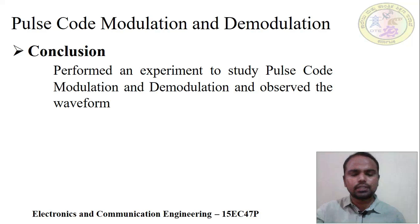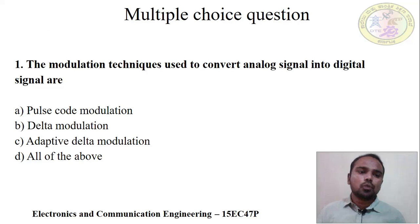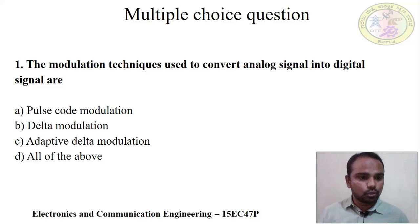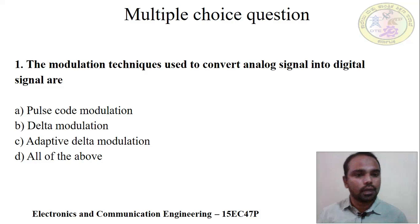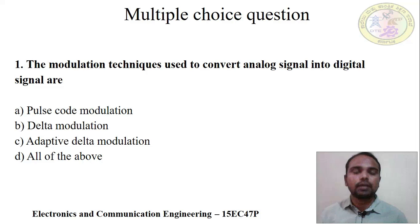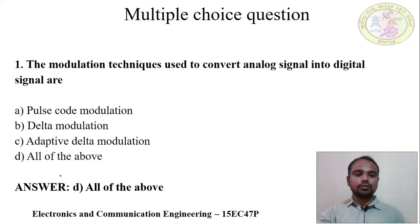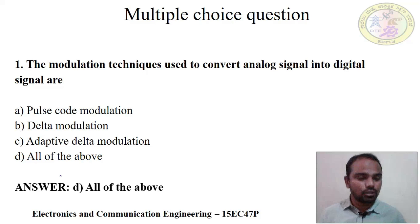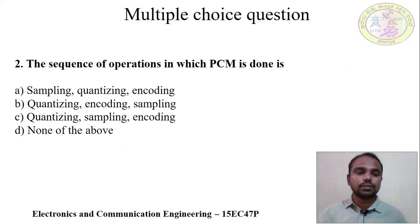Now let us test our understanding with multiple choice questions. Question 1: Which modulation technique is used to convert analog signal into digital signals? Options are: A) Pulse code modulation, B) Delta modulation, C) Adaptive delta modulation, D) All of the above. The correct answer is D — all of the above. Pulse code modulation, delta modulation, and adaptive delta modulation are all techniques used to convert analog signals to digital signals.